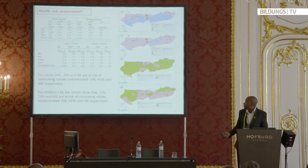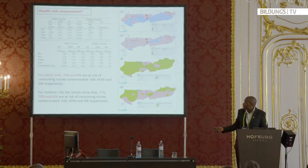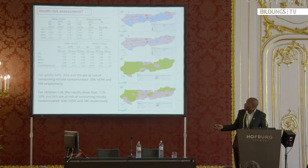This map gives the spatial distribution of how the health risk is distributed across the area — this one is for adults and this one is for children.